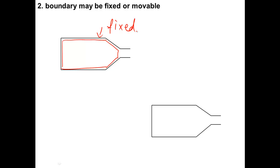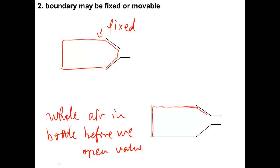But let's think about another case. We choose the border which encloses the whole air in the bottle before we open the valve. At the beginning, the boundary looks like this. After opening the valve, we get another form of boundary since air flows out. We see the border moves in this case, so it's movable.